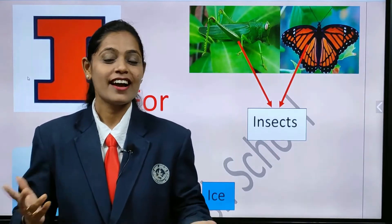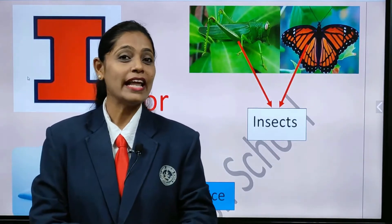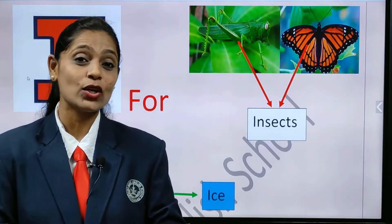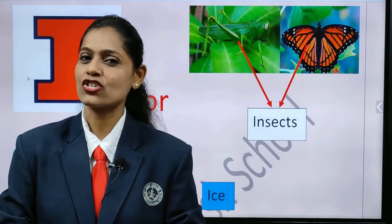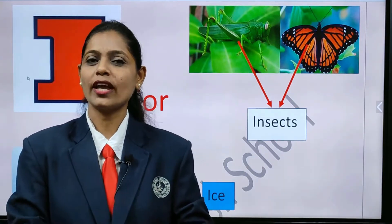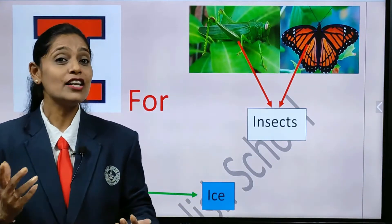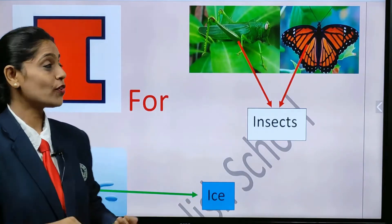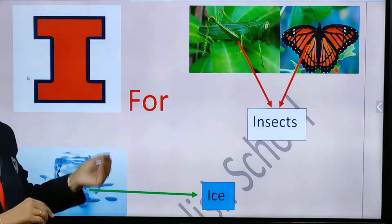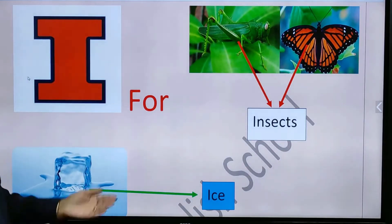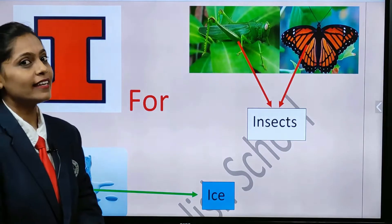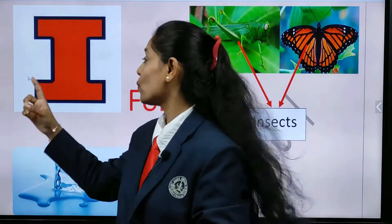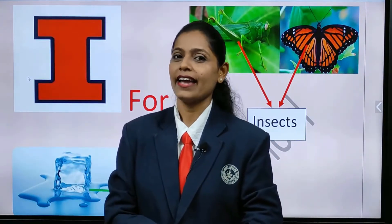Hello my dear children, how are you all? We have learnt the alphabet from A to H, and today we are going to learn a new alphabet. For that, all of you look on the board — which alphabet is this? Yes, I. Which letter is this? I.